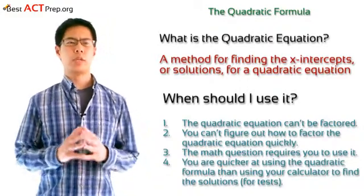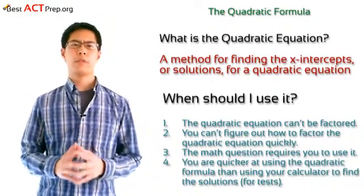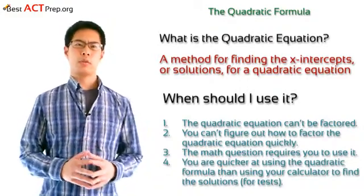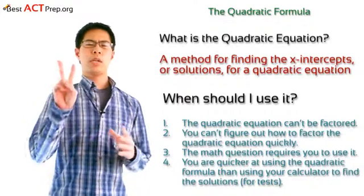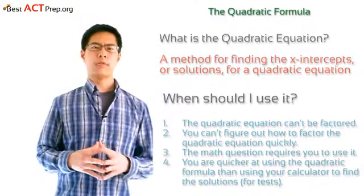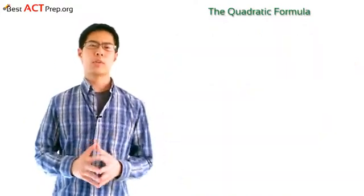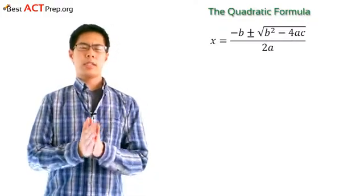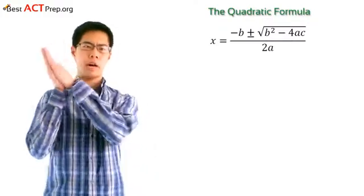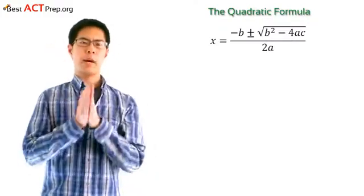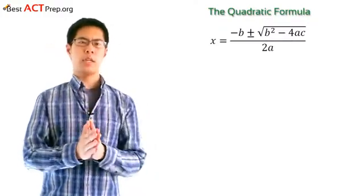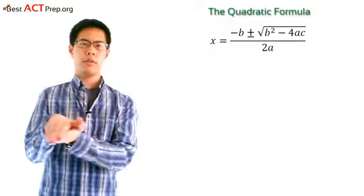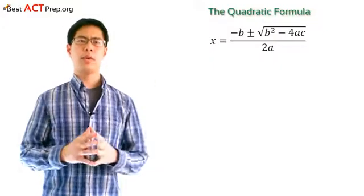The quadratic formula is going to give you two different solutions, which will be the two different x-intercepts for the quadratic equation. Here's what the quadratic formula looks like: it's going to be negative b plus or minus the square root of b squared minus 4ac, all over 2a.